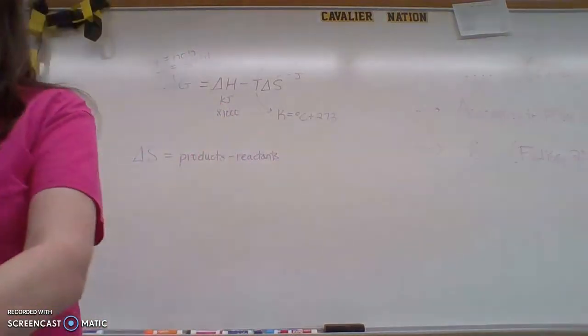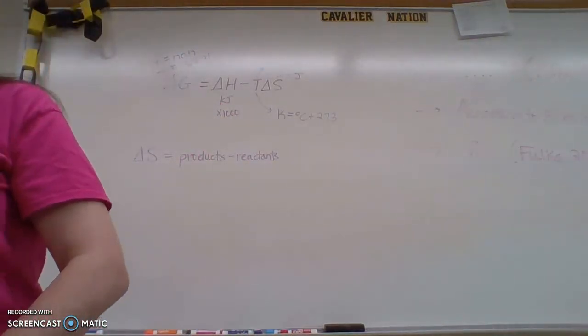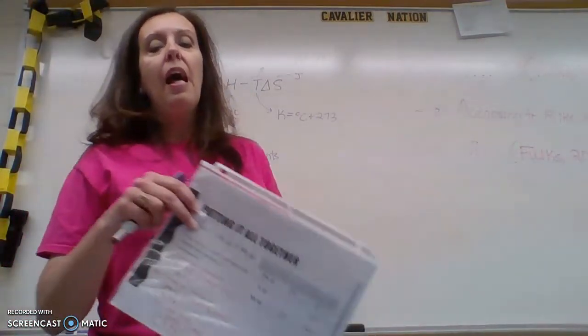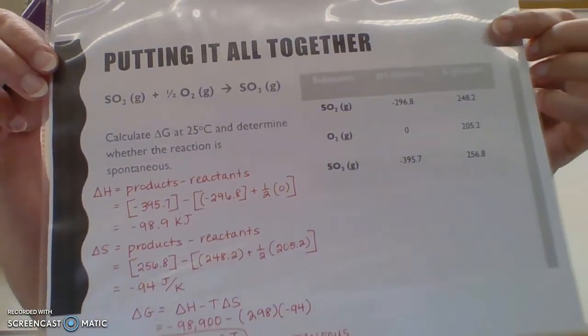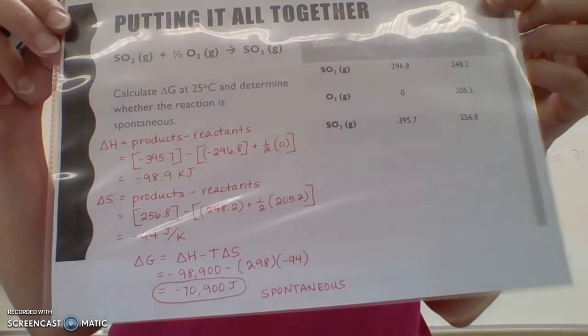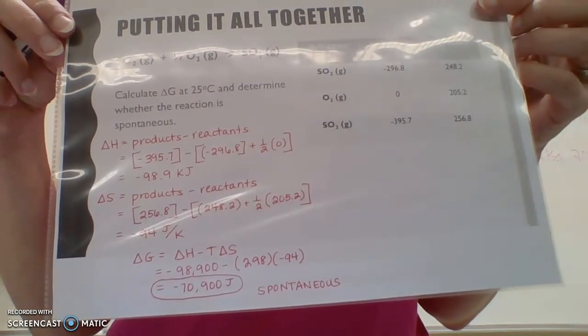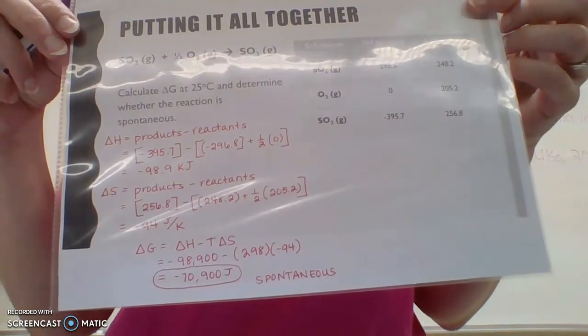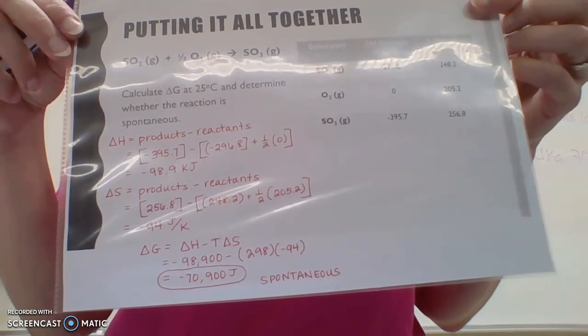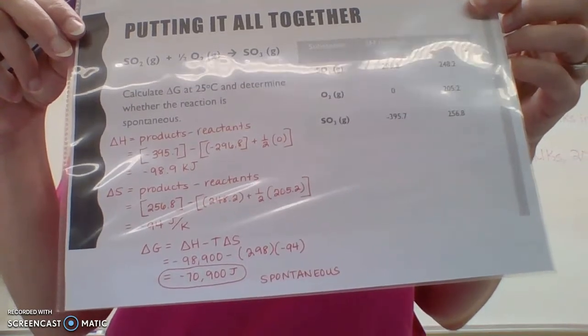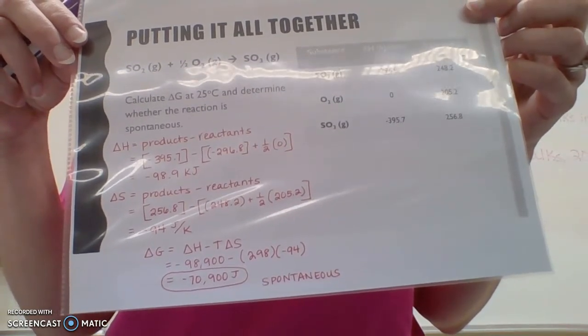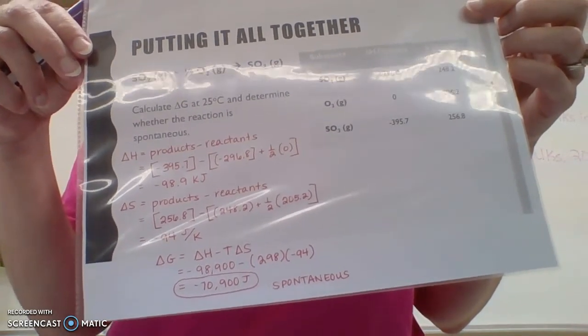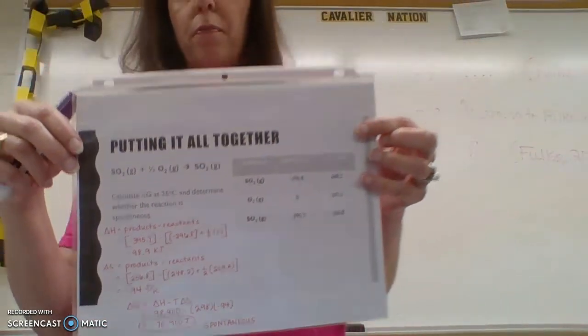Moving on, putting it all together. How can I be really mean and evil on a test or on a quiz? Because sometimes I like to fly in on my broomstick. I could give you an example like the next one in your notes, where you have to find delta H, products minus reactants, and you would use the values in the table, and then you would find delta S, products minus reactants, using the values in the table, and then you would plug them into delta G. I really like this type of question because it makes you use three equations to find your answer. It shows you how they are all intertwined together.